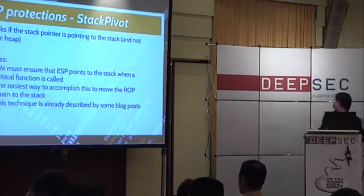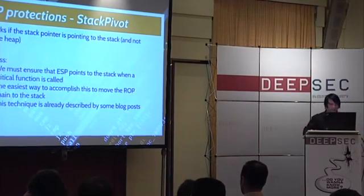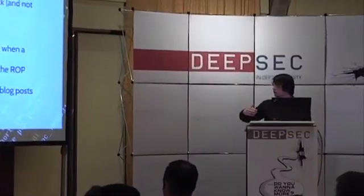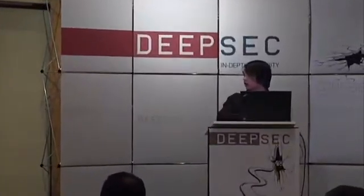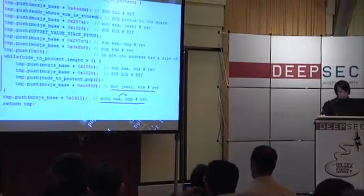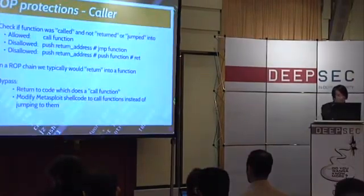Another protection is the stack pivot, which checks that the stack pointer must point to the stack and not the heap. The bypass is simple: write a short ROP chain that first ensures the EAX register points to the stack, then in a loop copies everything from the heap to the stack using a store instruction, and finally uses an XCHG instruction to shift execution to the stack. This copies the ROP chain from the heap to the stack before the critical function is invoked.